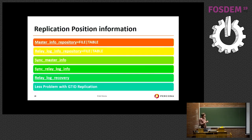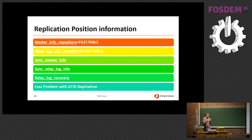In terms of replication position information storage, MySQL gives you choices: you can store it in a file or in a table. Storing it in a file makes it very hard to synchronize in case of power loss. The general trend in MySQL 8 is to move that information to a table, though that comes with some performance considerations.